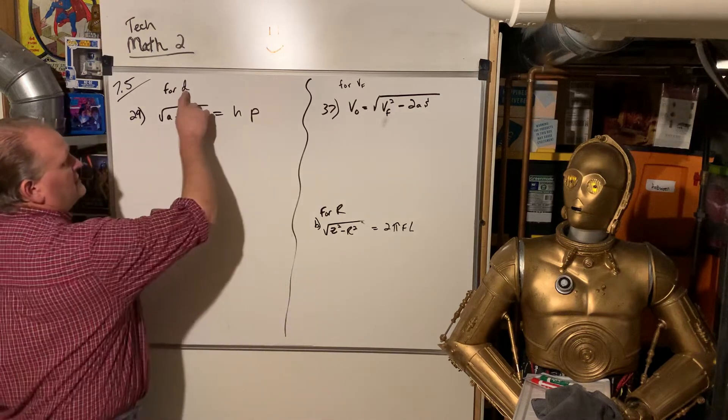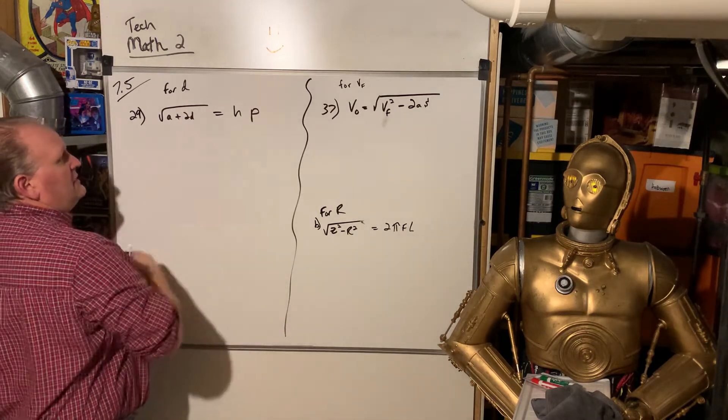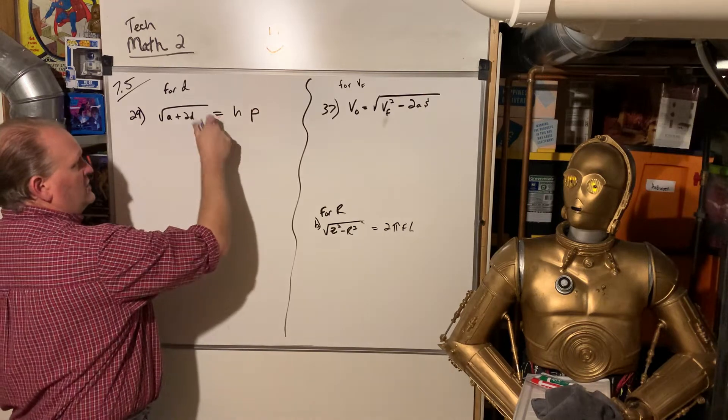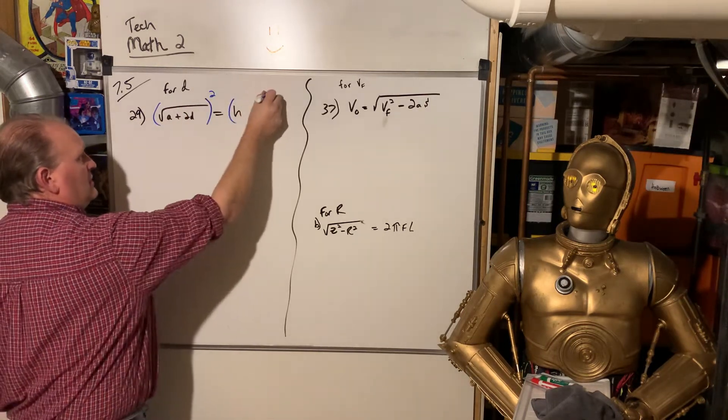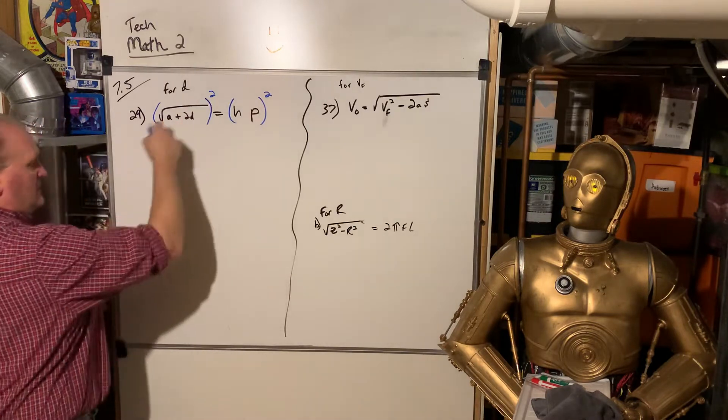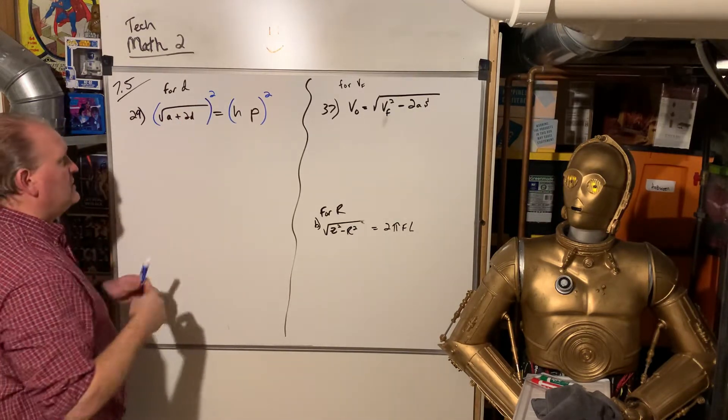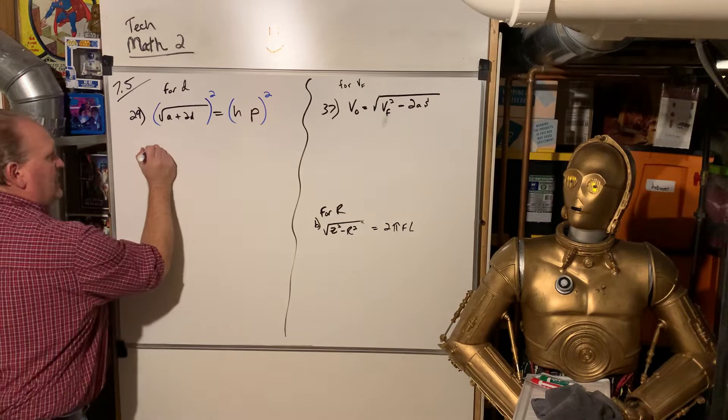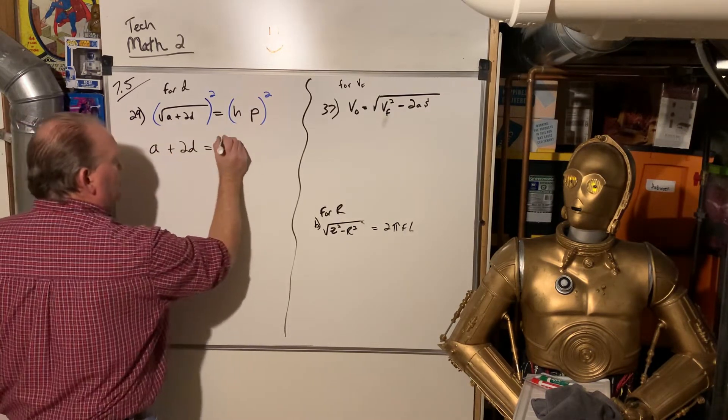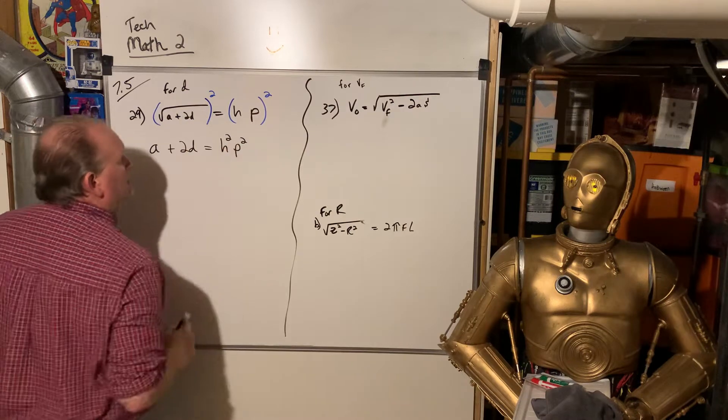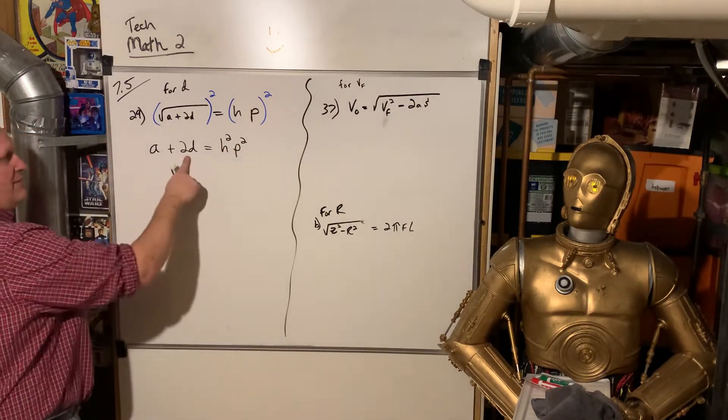They want us to solve for D. So here's D. When you have an equation, you can square both sides of the equation. What that does is that square kind of wipes out the square root. On this side, we just have A plus 2D. On this side, we have H squared P squared.